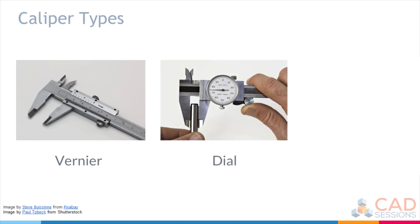There are also dial calipers that, as the name suggests, has a dial that is used for reading off the measurements. Dial calipers use a rack and pinion, and with some practice, you can get really quick at interpreting measurements.